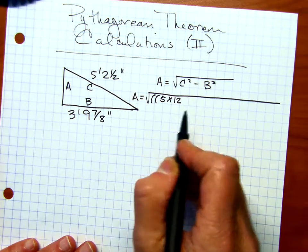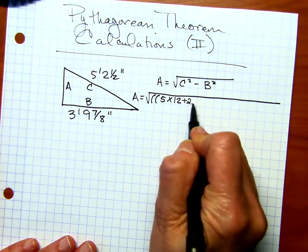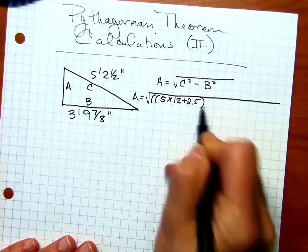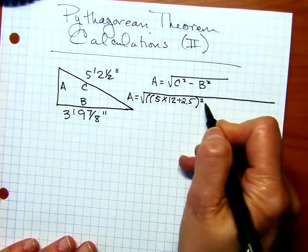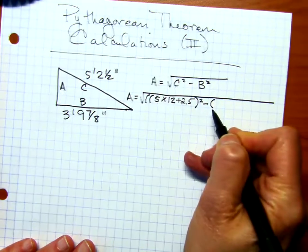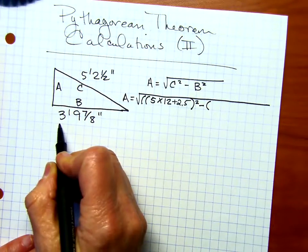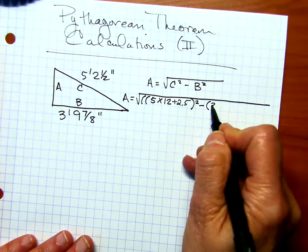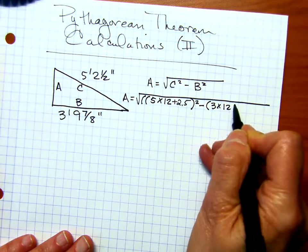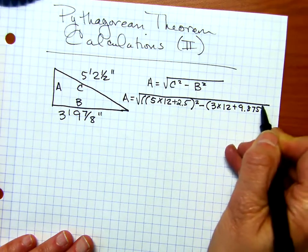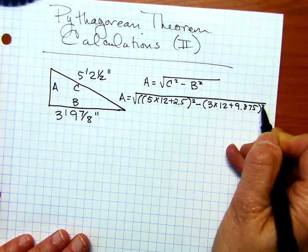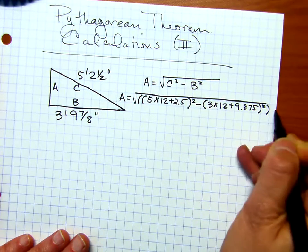So 5 times 12 plus 2.5, close parentheses, and then we're going to put that little exponent, minus open parentheses, and then I'm going to go ahead and insert the next one. So 3 times 12 plus 9.875, close parentheses, exponent, close parentheses, equals.